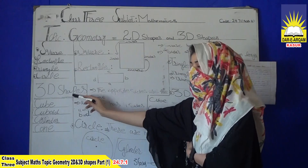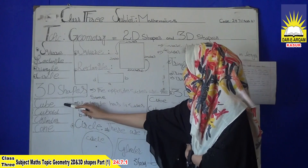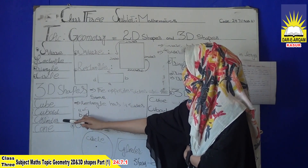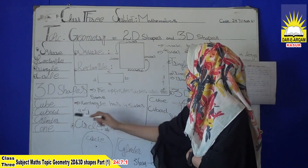Next we have 3D shapes: cube, cuboid, cylinder, and cone.